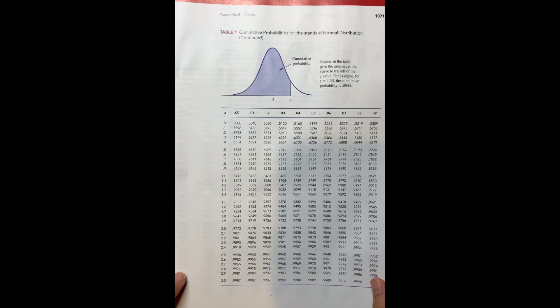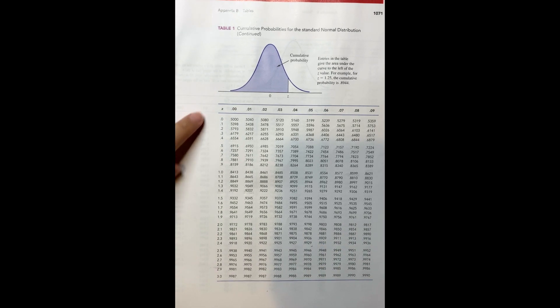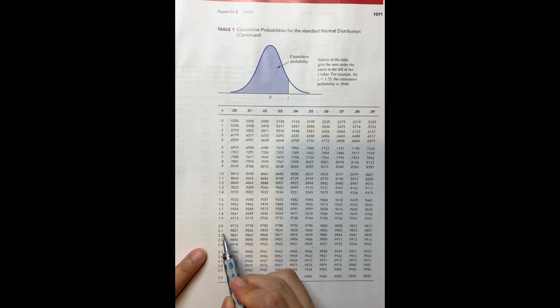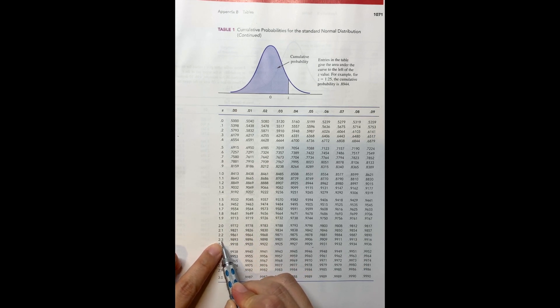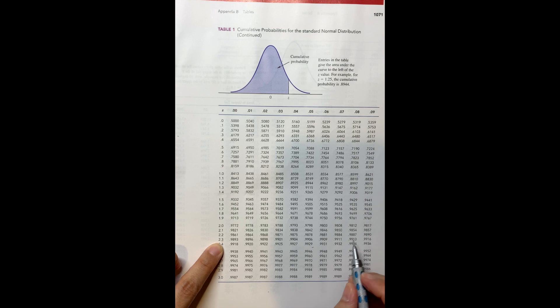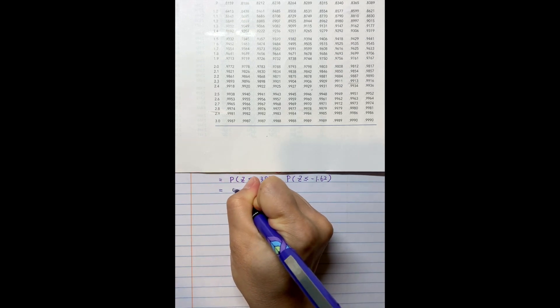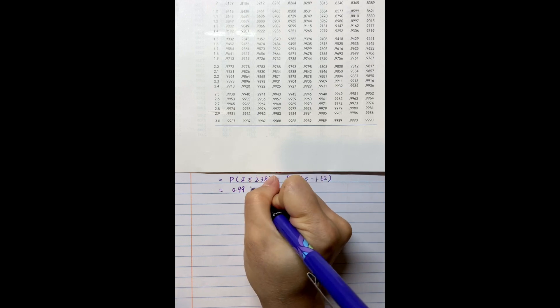We go back to the standard normal distribution table to find the z-value. For z equal to 2.38, we find the first digit 2.3 and the second digit 0.08. The corresponding probability is 0.9913. That is the probability for z less than or equal to 2.38.